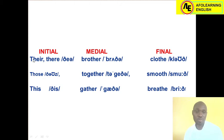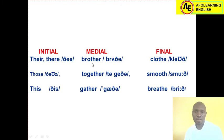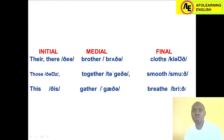Let's take a look at the distribution of /ð/. At the beginning of words you can find the sound in the following words: there, those, and this. At the middle you can find the sound in: brother, together, and gather. At the end you can find the sound in the following words: close, smooth, and breathe.